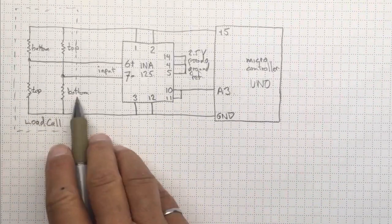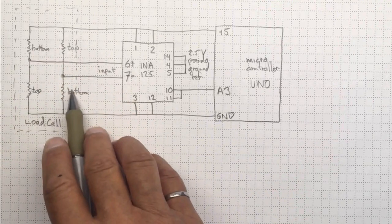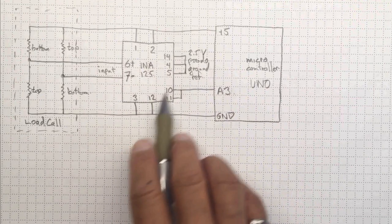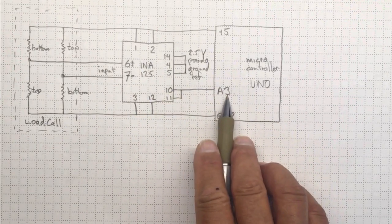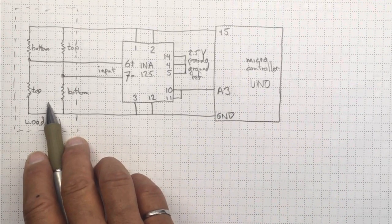Now, it doesn't particularly matter which ones we choose. We're going to have to figure out the final results of that when we do a calibration of our instrumentation amplifier over here to find out how the voltage we read on A3 relates to the load that we apply to the load cell.